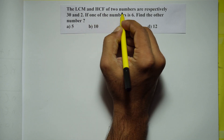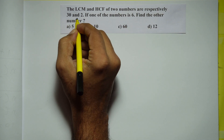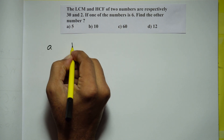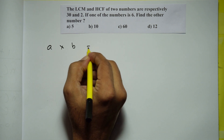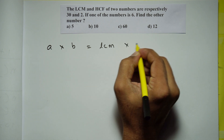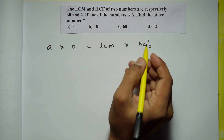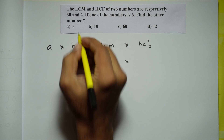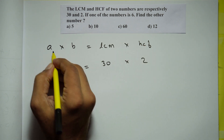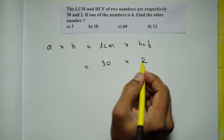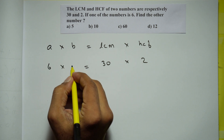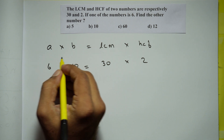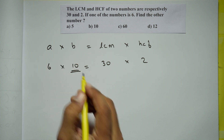The LCM and HCF of two numbers are respectively 30 and 2. If one of the numbers is 6, find the other number. For two numbers A and B, their product equals LCM times HCF, which is 30 times 2 equals 60. Since one number is 6, the other must be 10, because 6 times 10 equals 60. So the answer is option B, 10.